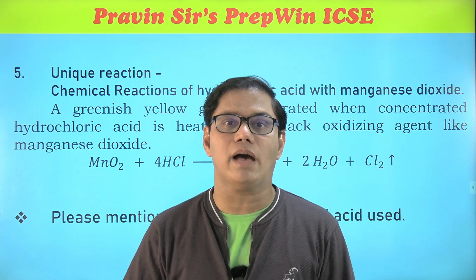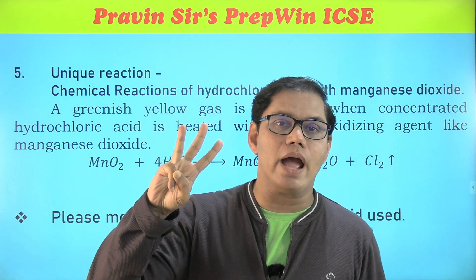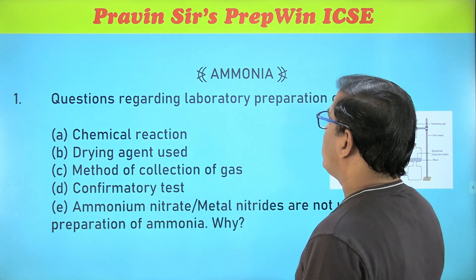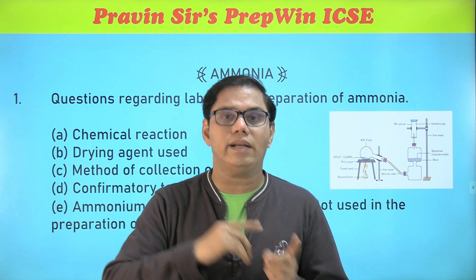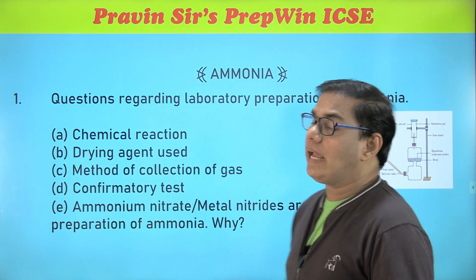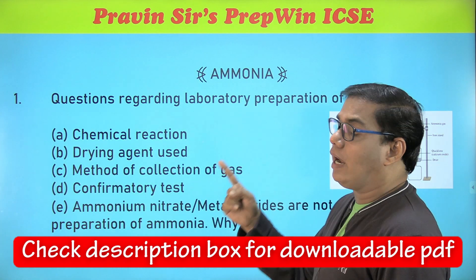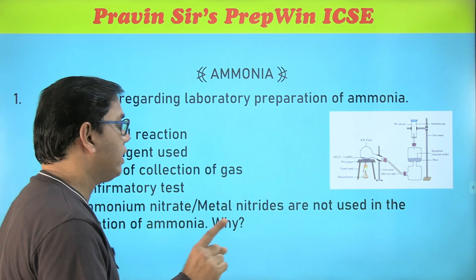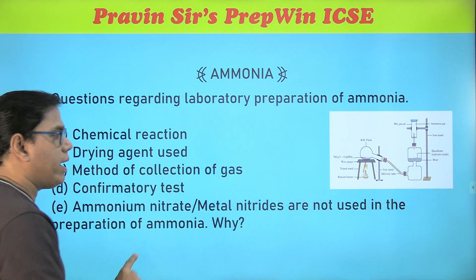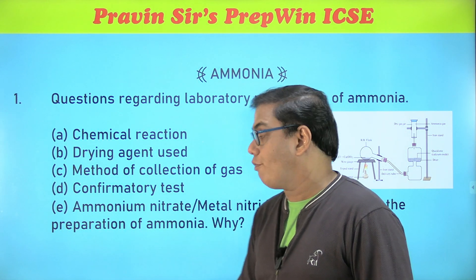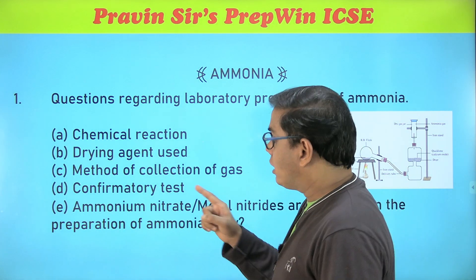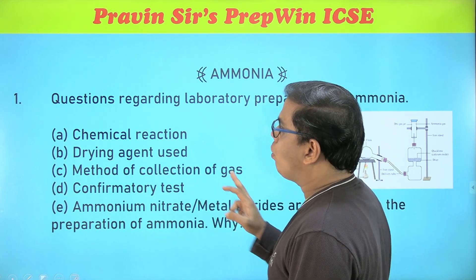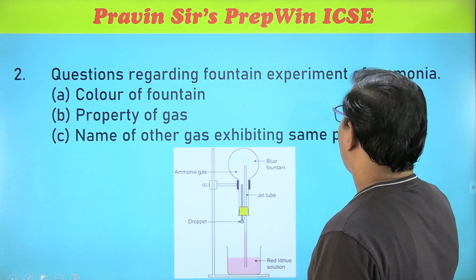The third chapter from the chemistry syllabus for semester two is ammonia, and from this chapter I am going to make three important predictions. Prediction number one is again the laboratory preparation of ammonia — the chemical reaction between reactants to get the product, the drying agent used, the method of collection of the gas, and how you confirm it is ammonia gas. Ammonium nitrate or any other metal nitrate could also be used in preparation of ammonia but they are not used — why? Because of their explosive nature and because they are expensive.